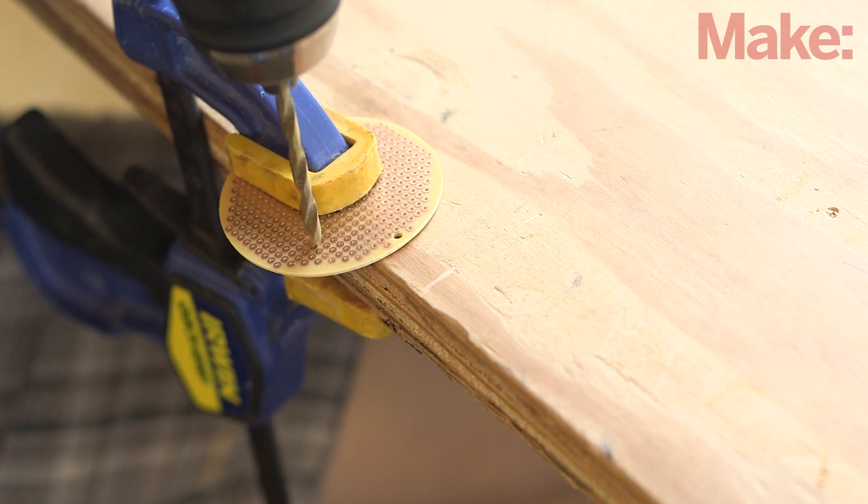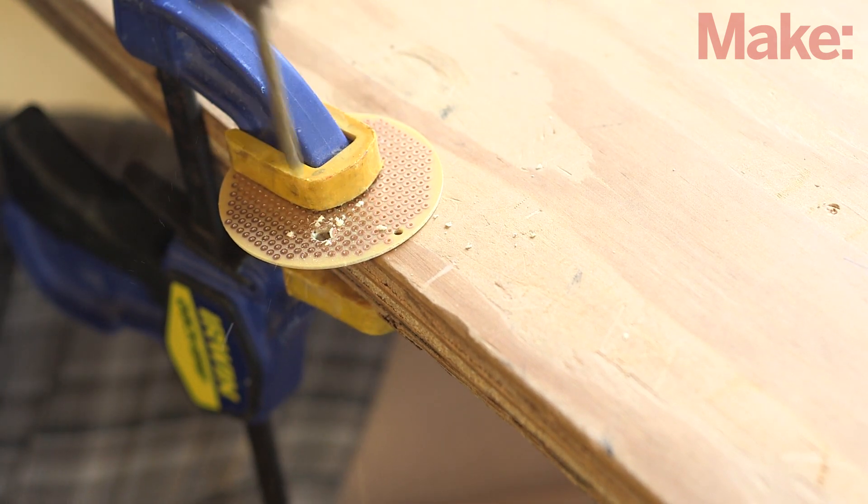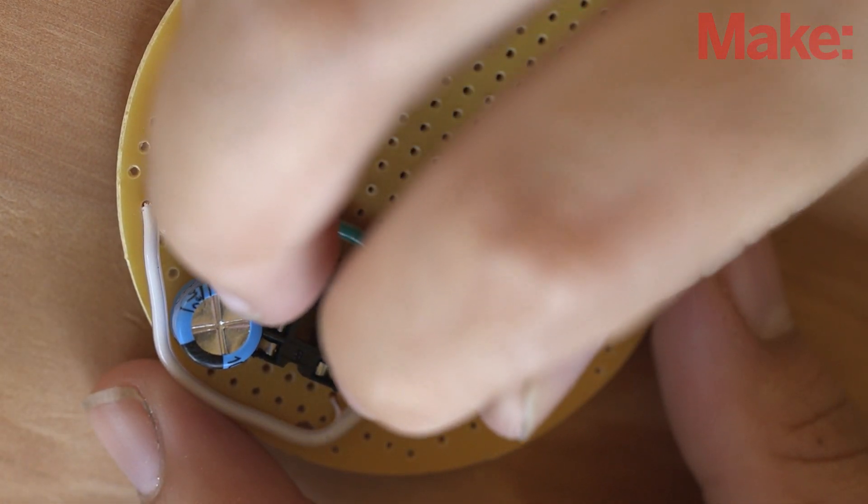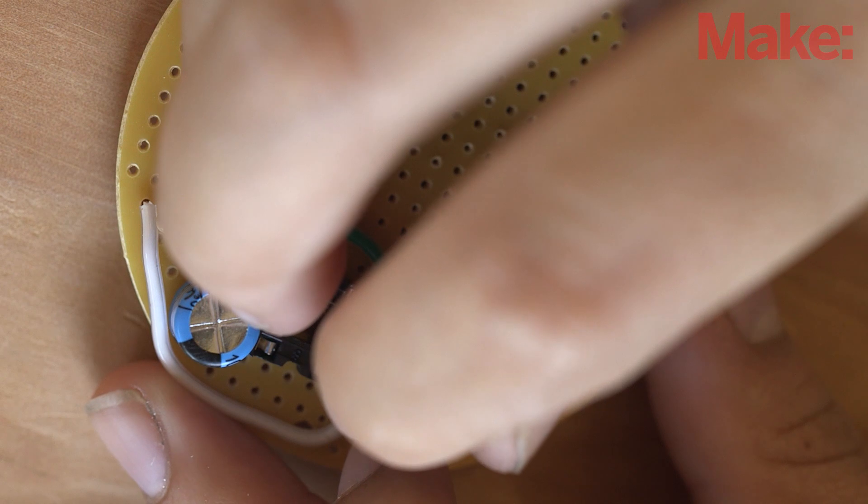Grab the largest board from the pack, then mark and drill a hole that will fit the momentary switch. Populate the top area of the board with all the necessary components, including the IC socket, capacitors, resistors, and wires.